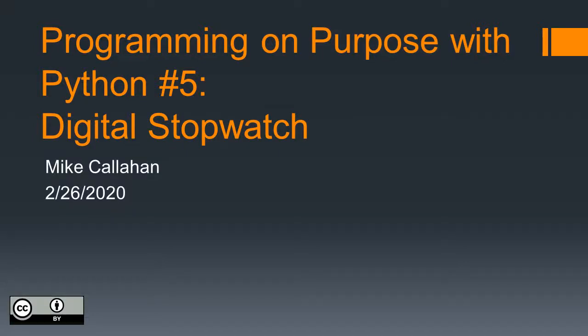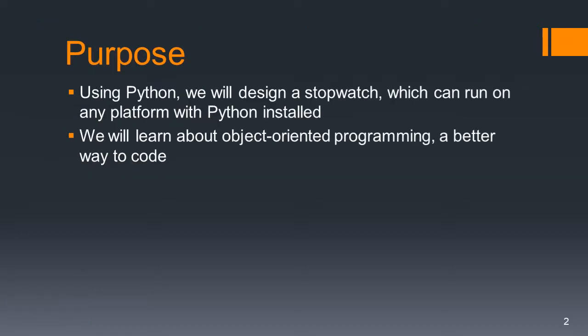Greetings, and welcome to Programming on Purpose with Python number 5, Digital Stopwatch. My name is Mike Callahan, and I am a STEM educator. Our purpose for this slideshow is, using Python, we're going to design a stopwatch. But the big lesson is learning about something called object-oriented programming, which you will find out is a much better way to code.